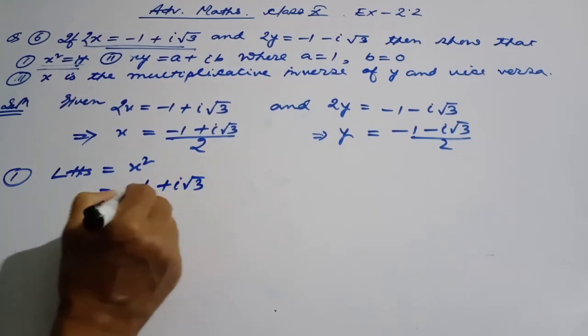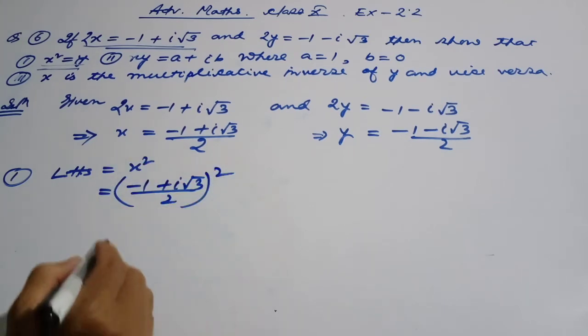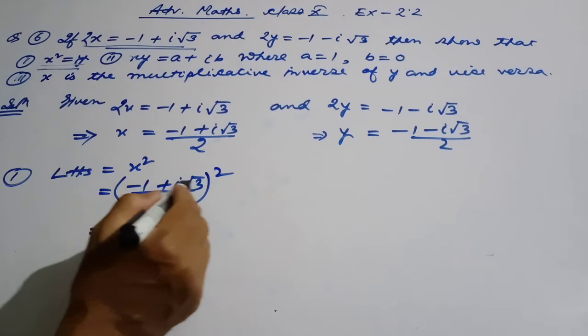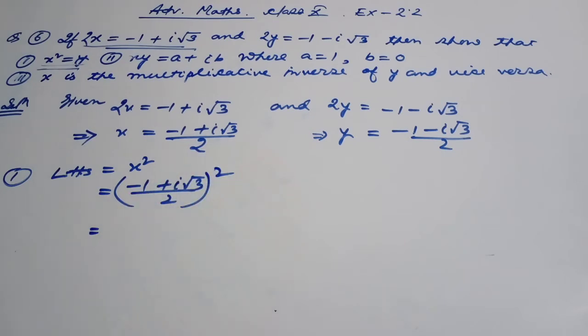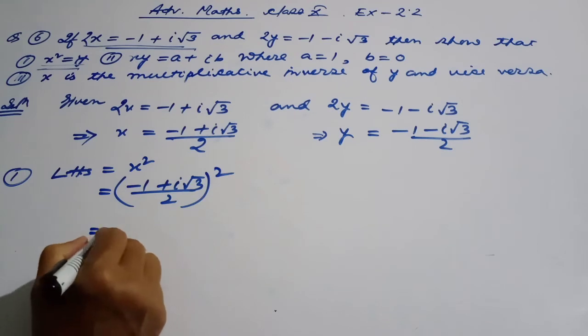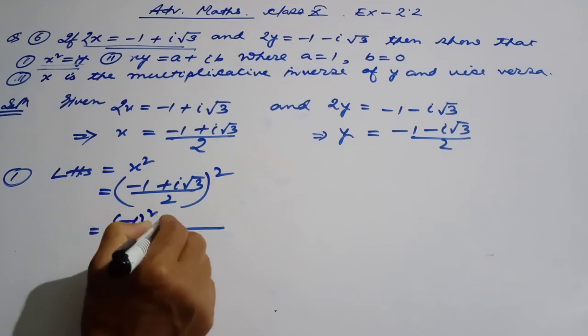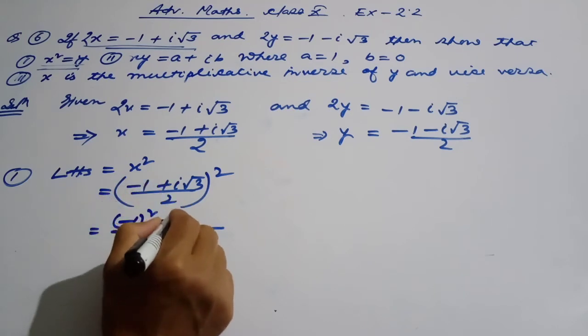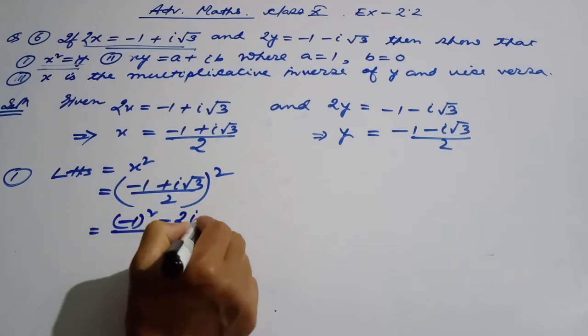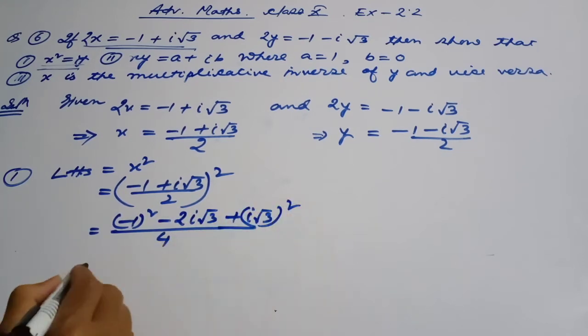Already about it, we're going to expand minus 1 plus i root 3, two squares of your squared. It's quite like a plus b. What is my identity? Minus 1 whole square plus twice minus 1 times i root 3 plus i root 3 whole square.